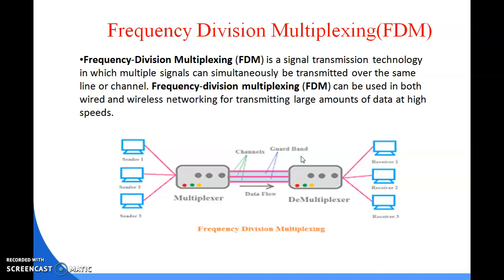Examples of FDM include radio and television broadcasting, where multiple radio signals at different frequencies pass through the air simultaneously, and cable television, where many channels are carried on a single cable. Telephone systems also use FDM to transmit multiple calls through high-capacity trunk lines, and communication satellites are another example. The best everyday example is your home TV: only one cable connects from the antenna to your set-top box, yet multiple channels pass through it.